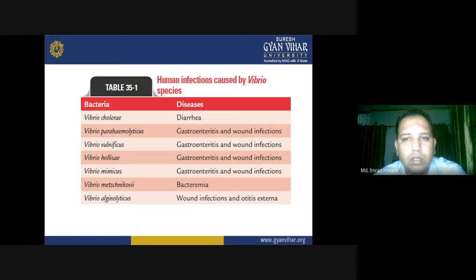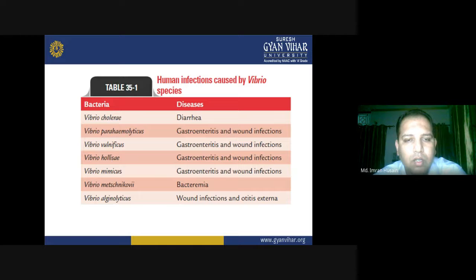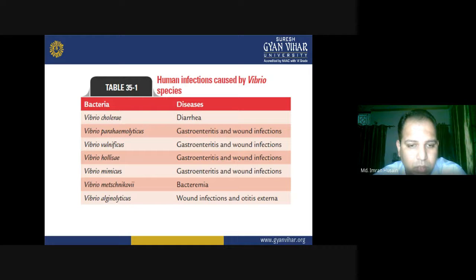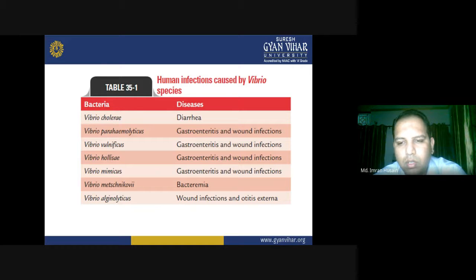Human infections caused by Vibrio species include: Vibrio cholerae, which causes diarrhea; Vibrio parahaemolyticus, which causes gastroenteritis and wound infection; Vibrio vulnificus, which causes gastroenteritis, wound infection, bacteremia, and otitis externa; and Vibrio halcyi, which also causes gastroenteritis and wound infection.